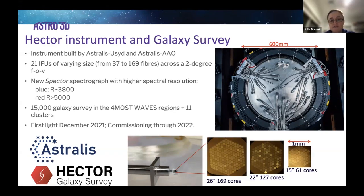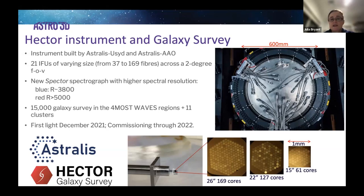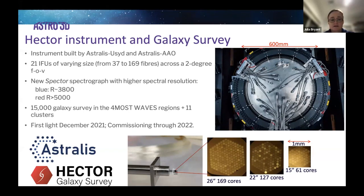These galaxies are targeted in the WAVES regions plus 11 clusters. Piggybacking on the WAVES regions gives us excellent environment metrics to understand large-scale and nearest-neighbor environment statistics. We've added 11 clusters to trace galaxy evolution across all halo masses, filling out the largest halo masses beyond what currently exists within the WAVES region.